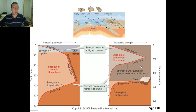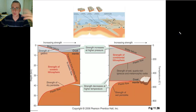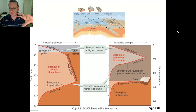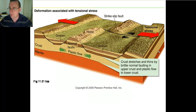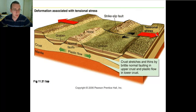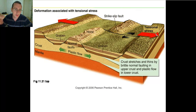Why is this important? Because when you're talking about the deformation of the crust, you need to understand how the crust changes with depth. For example, when you have a divergent boundary and you're experiencing a lot of tensional stress, the crust is actually stretching and thinning out, and it does so in two different ways.